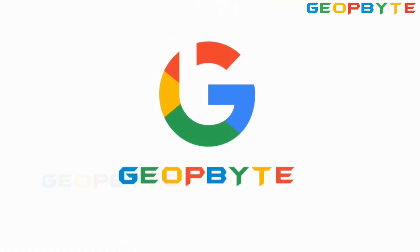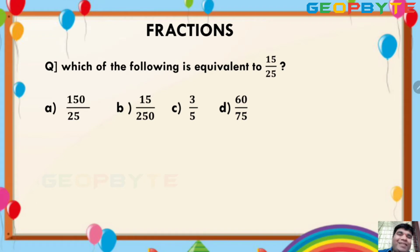Geobytes. My dear children, next question. Read the question. Which of the following is equivalent to 15 by 25? So what is the equivalent fraction? Already you know. The fraction numerator and denominator is different, but the result should be equal. Here, simplify that fraction.